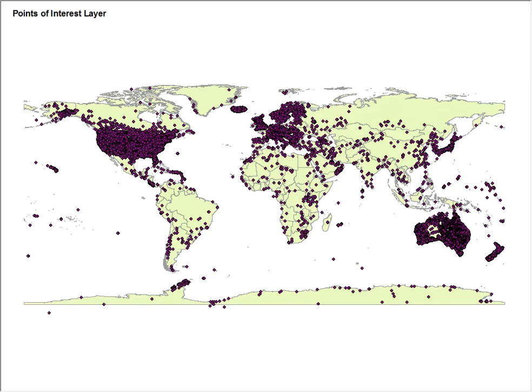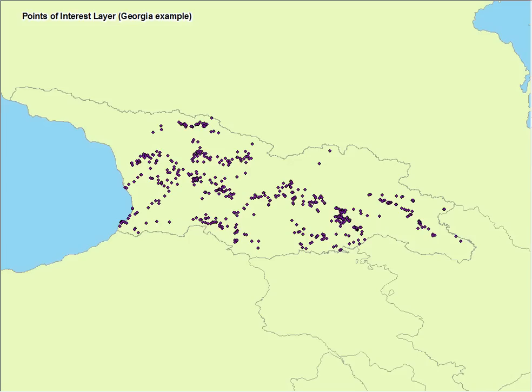Another layer that we have added to is our Points of Interest layer. The Points of Interest layer currently consists of 100,000 points spanning over 75 categories. This example shows the Points of Interest in the country of Georgia.